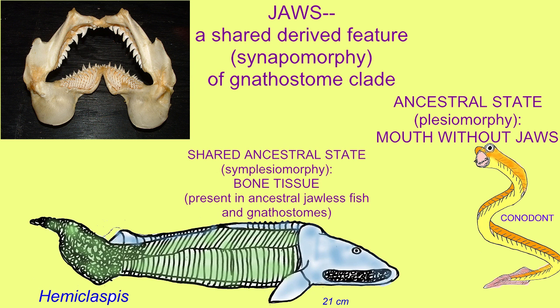Since not all parts of the gnathostome body plan were reworked from the ancestral state, there are many conditions which are shared among both the gnathostomes and their vertebrate ancestors, such as bone. This would be a symplesiomorphy — a shared ancestral feature — which would not be useful in classifying this group, since it is shared among both the ancestral and derived groups.